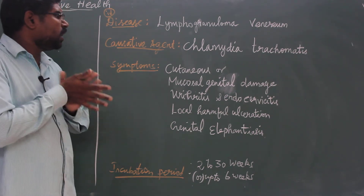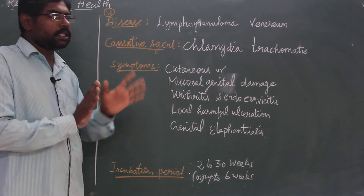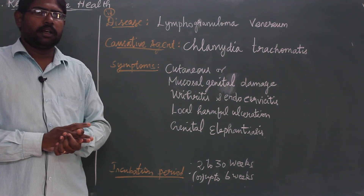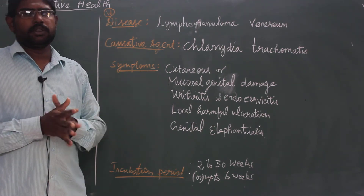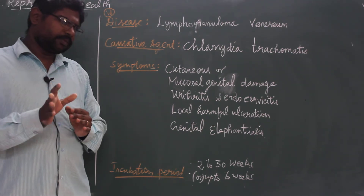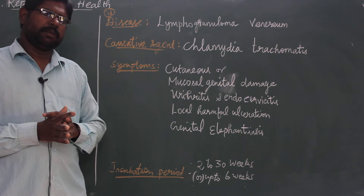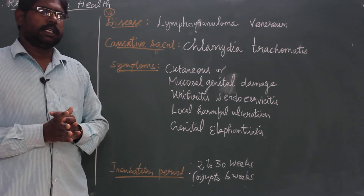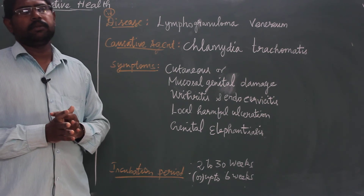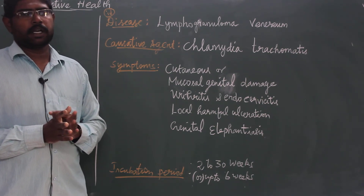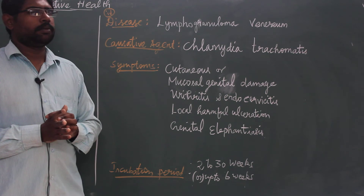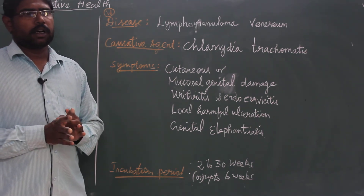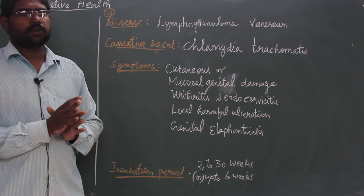In this case, Chlamydia trachomatis damages the mucosal layer. If the mucosal layer is damaged, the secondary immune system — specifically the mucosal-associated lymphoid tissue — is also affected.